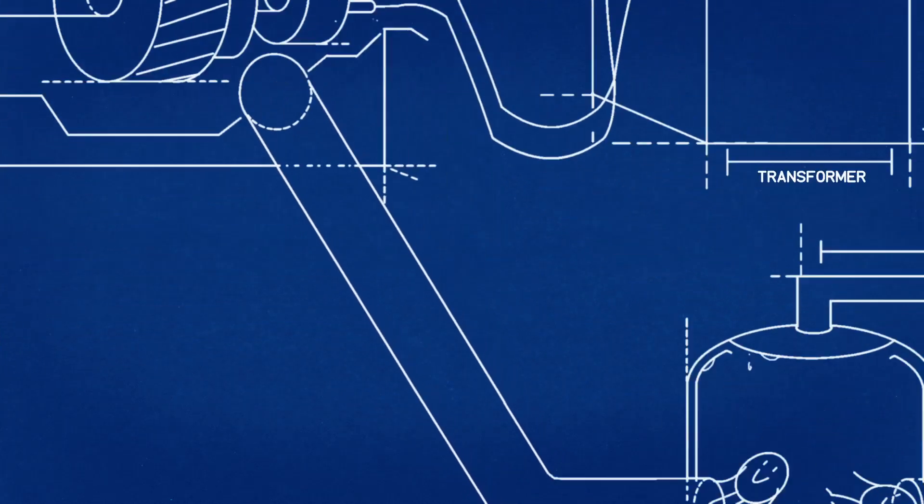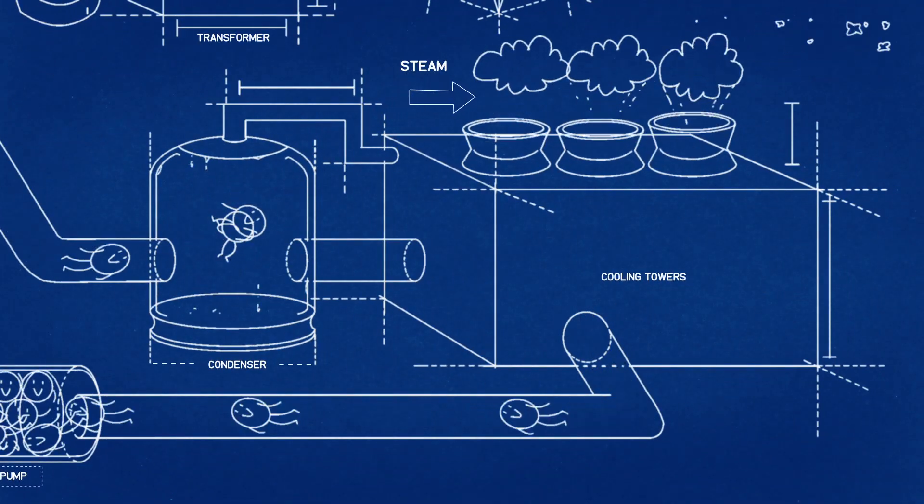Condensed steam is pumped underground with a reinjection pump, returning the fluid to the reservoir.